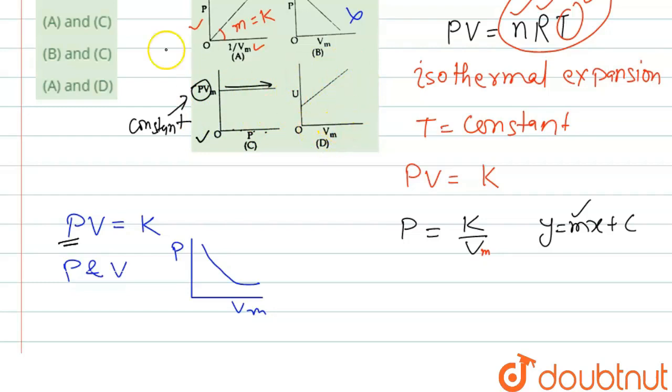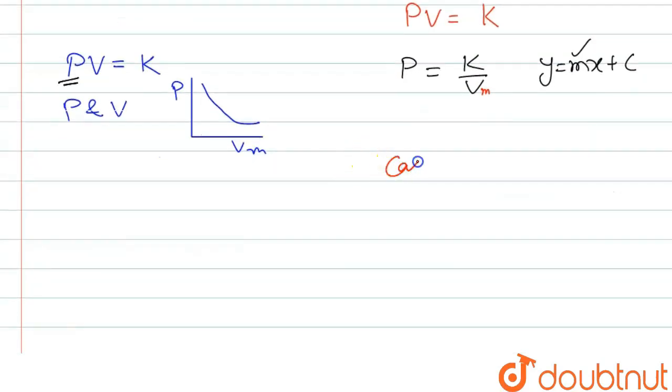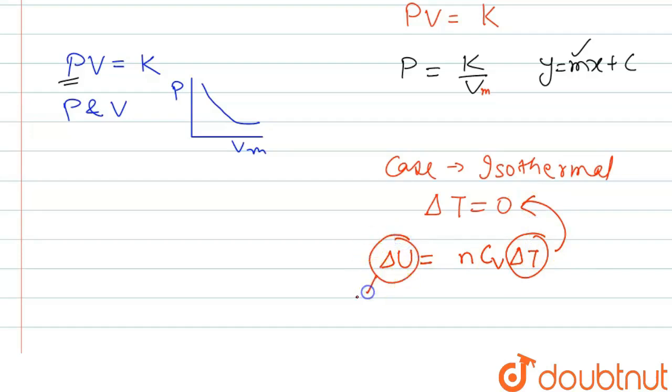If you see the last graph, it is between change in internal energy and Vm. So if we take this case, the case is isothermal, that means del T will be zero, no change in temperature. If we write the formula for del U, then it will be n Cv del T. And we know that this is zero, so this term will also be zero.